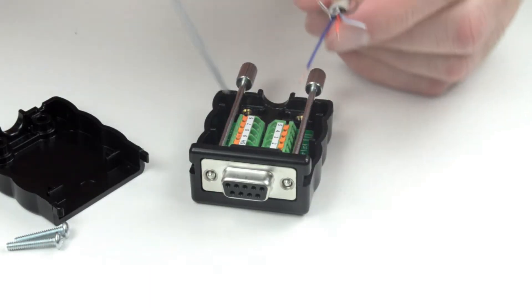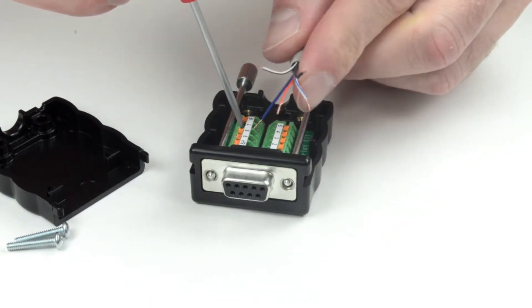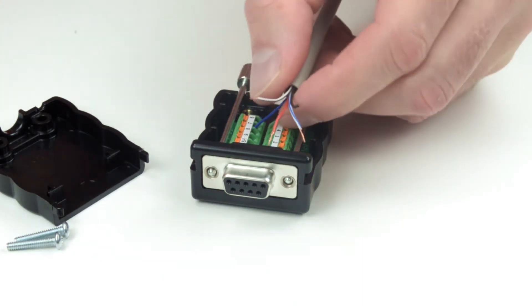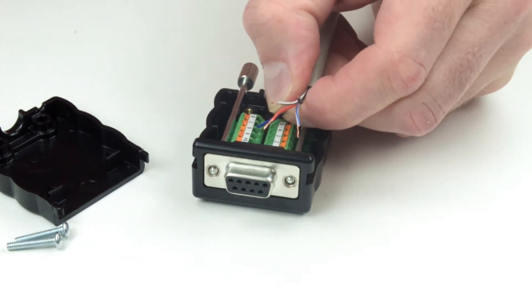For spring terminals, press down the button on the top of the terminal block, insert the wire, and release the button. This process is quick and secure.